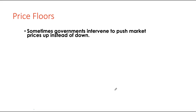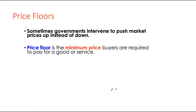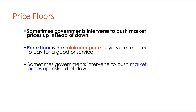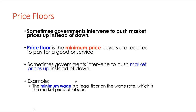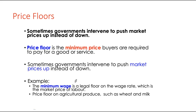Next we look at price floors — another type of price control, but in this case setting a price that pushes the market price up. A price floor is a minimum price that buyers are required to pay. The legal restriction says you cannot charge a price lower than this level, but you can always charge higher. Once the price hits the floor it cannot go further down. A common example is minimum wage — a legal floor on the wage rate. Other examples include price floors on agricultural produce like wheat or milk.